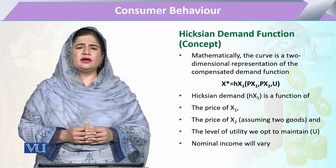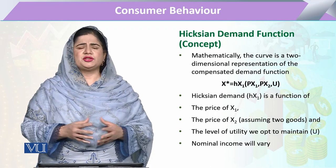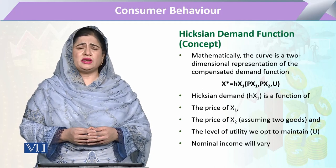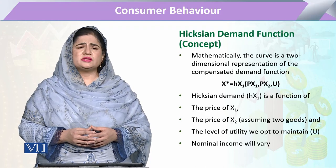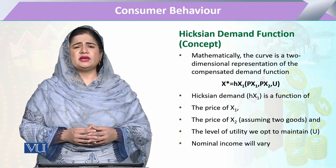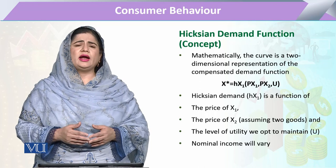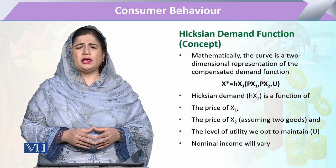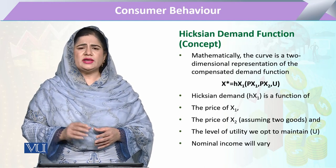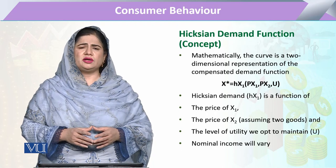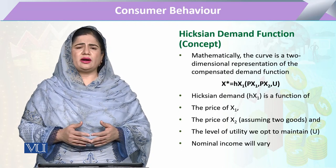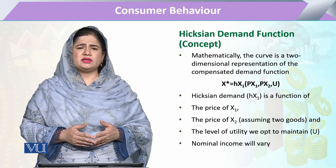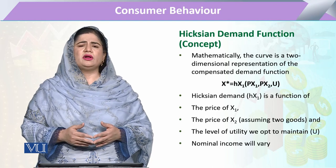In Marshallian demand, the demand curve for X, Y, or Z depends upon price vectors — the price of the own commodity and the price of all other commodities. In the Marshallian approach, we keep the vectors of prices and the income of the consumer constant. But in Hicksian, we assume that the consumer's demand function is a function of prices, keeping the utility level constant.